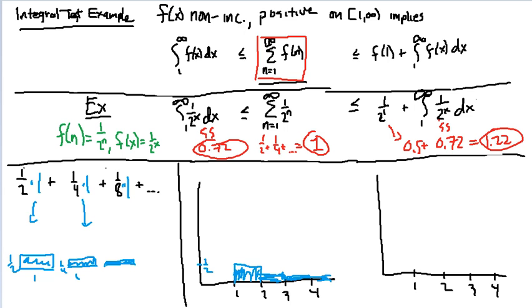Let's compare that to the function, 1 over 2 to the x. Well, if we graph this from 1 to infinity, what we get is, if we plug in 1, we get 1 half, which is right there.